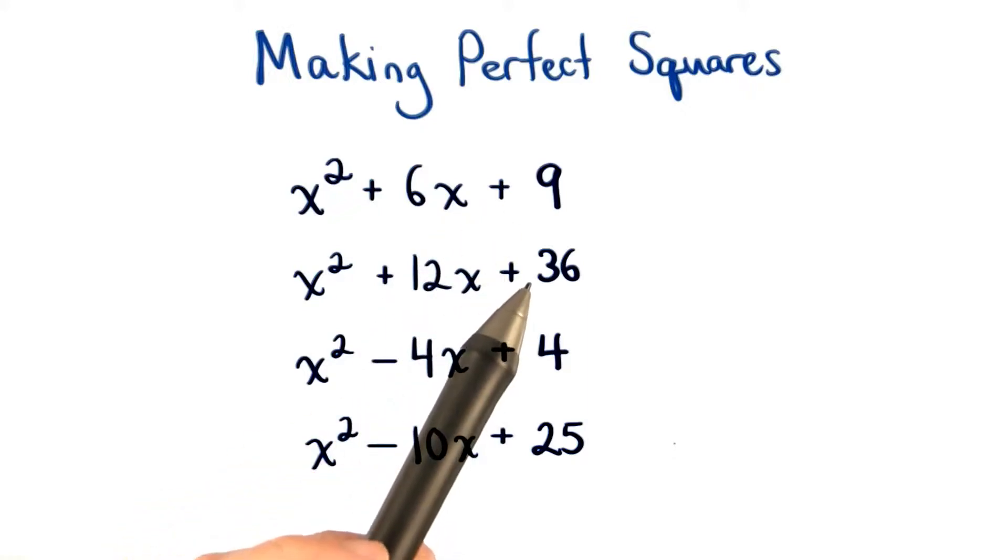We would need to add 9, 36, 4, and 25 to complete each of these squares. Great thinking if you found these numbers.